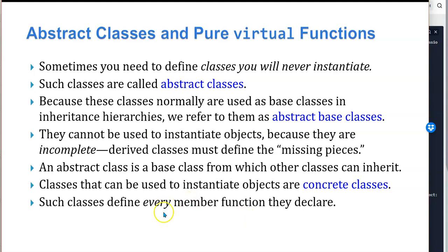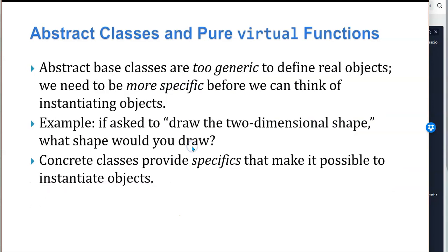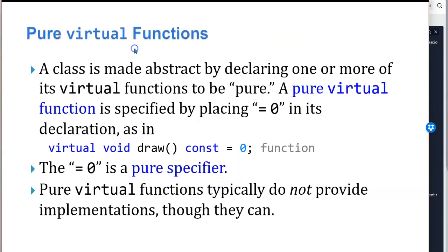Concrete classes must define every function they use. Abstract base classes are too generic to define real objects — we need to be more specific where we think of instantiating objects. For example, if asked to draw a two-dimensional shape, what shape do you draw? Concrete classes provide specifics that make it possible to instantiate objects, like a circle, which is a type of two-dimensional shape — we know how to draw it.